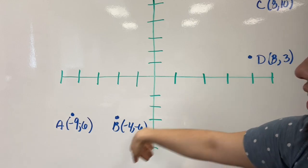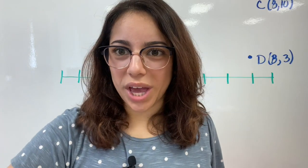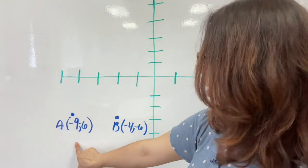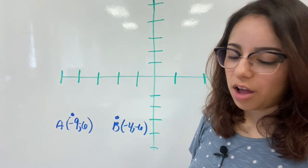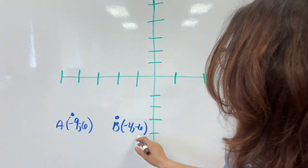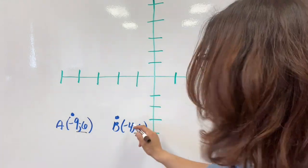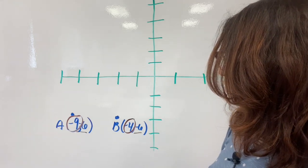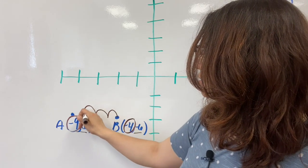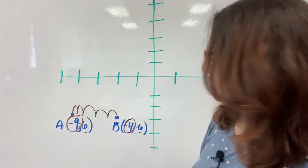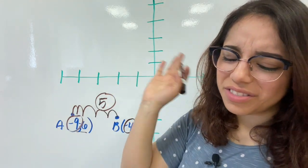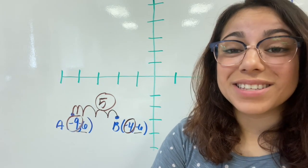We are set to get started. Part A, step one: look at the coordinates on the plane. We're looking at points A and B to find the distance between the pair on the coordinate plane. The Y is the same, so we're going to count our loops: 1, 2, 3, 4, 5 loops. So the distance from A to B is five units.